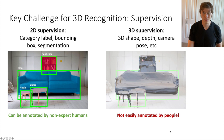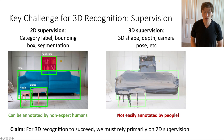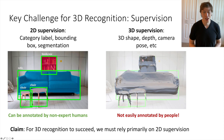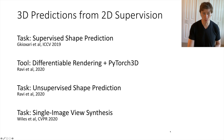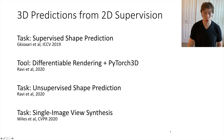To make progress on 3D recognition, we need to take a different approach. What I want to convince you of is that for 3D recognition to be successful, we need to rely primarily on 2D supervision — building systems that can make 3D predictions but are only supervised with 2D supervision. Today we'll cover four major topics: supervised 3D shape prediction, differentiable rendering and PyTorch3D, unsupervised 3D shape prediction, and single image view synthesis.